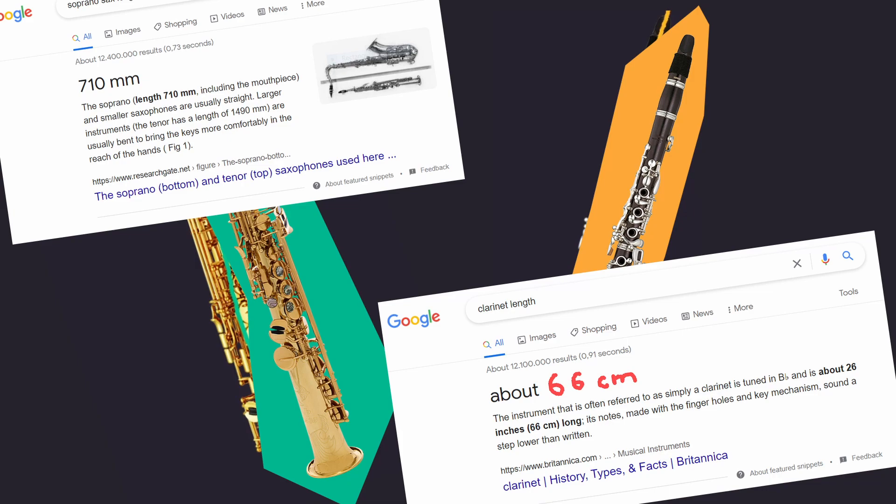Okay, now which instrument can produce the lowest note? This should be easy. If all the holes are closed for both instruments, then the saxophone has the longer resonance length. So the note of the saxophone should be lower. But this is actually wrong.